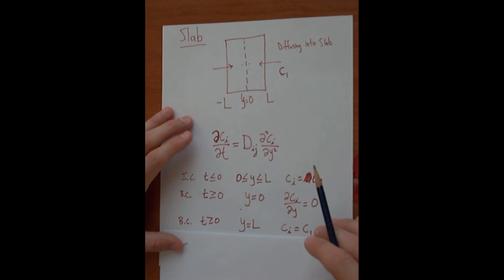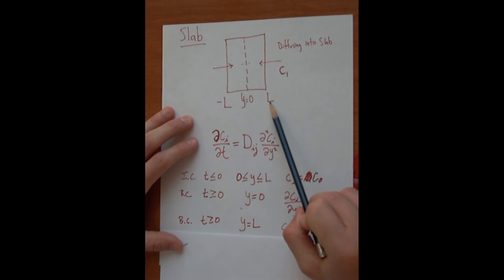Our other boundary condition, which is going to be at Y equals L, is going to be that concentration will always remain at C1. So at this surface, the concentration will always remain at the bulk concentration of the solution, which will be C1. So these are our governing equation and our boundary conditions that we can use to solve this equation and figure out the concentration profile through this slab.